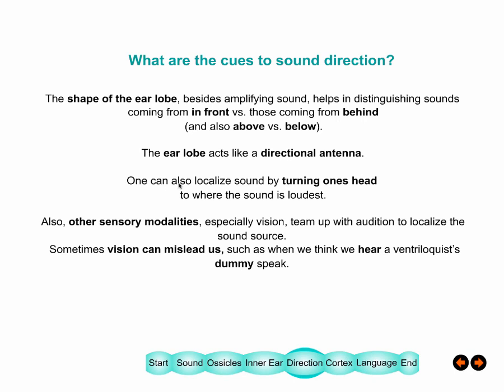The shape of the earlobe also helps determine where sound comes from. Your ears direct sound from the front more loudly. There are little ridges within the pinna that create tiny echoes — sounds bounce one way then another before entering the ear — and these echoes help you determine whether the sound is coming from above or below. You can also turn your head toward the sound; when you hear it equally in both ears, you know it's directly in front of you.